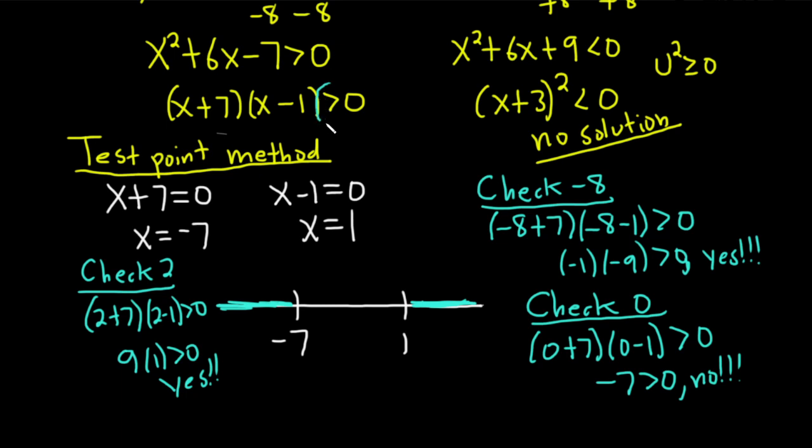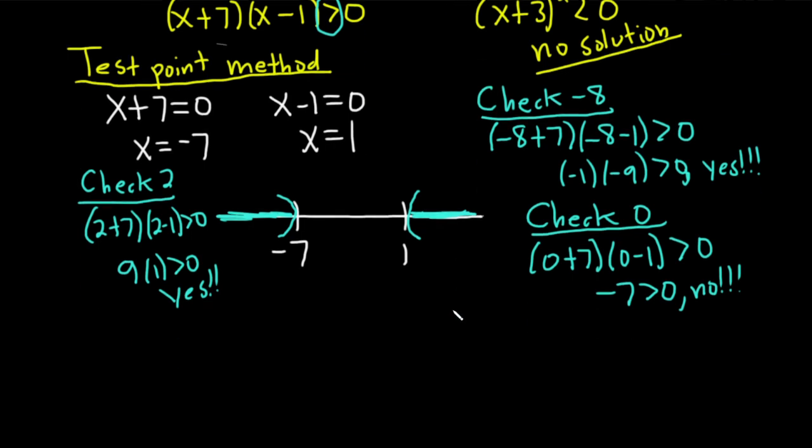And because we have a strict inequality or a strong inequality, we're going to use parentheses like this. And so now we can write the answer. The answer is going to be, this is a number line, so it goes on forever. So negative infinity to negative 7. Union and then parentheses 1 to infinity.